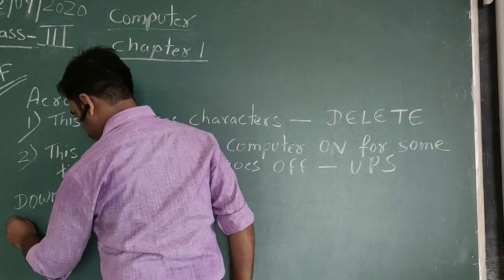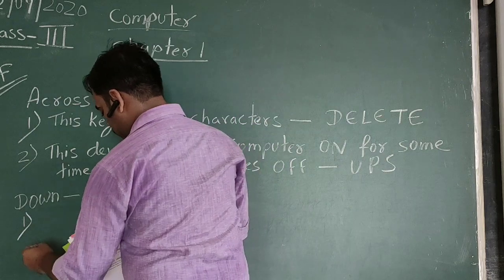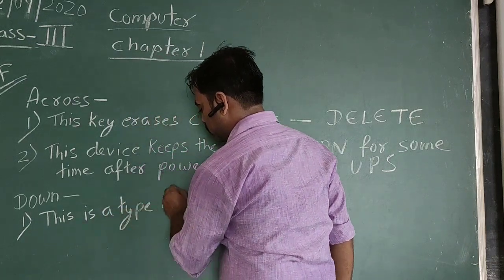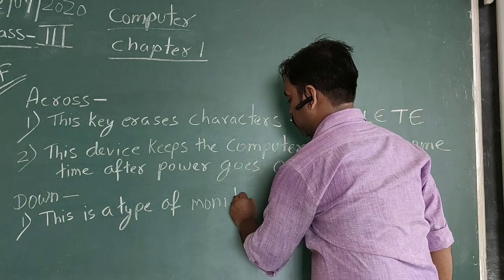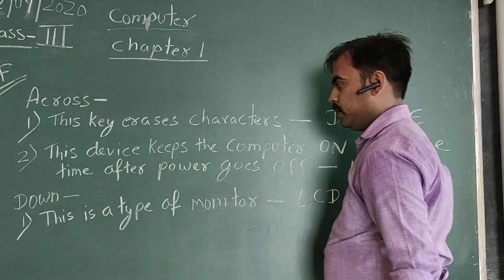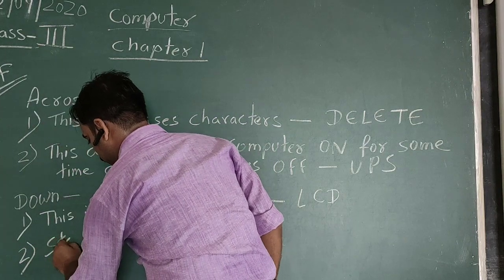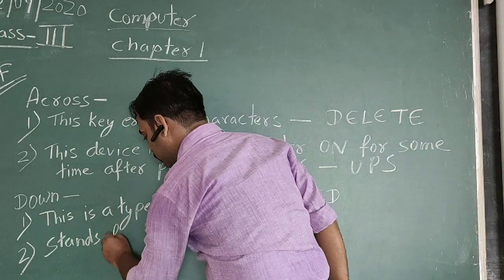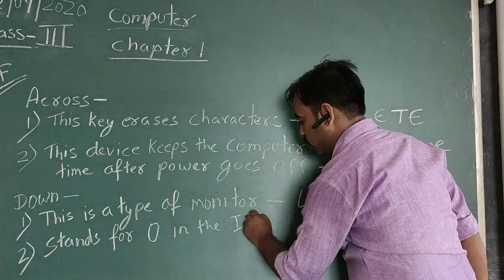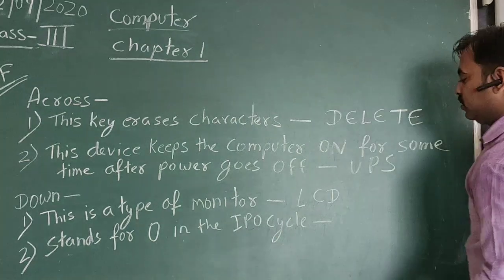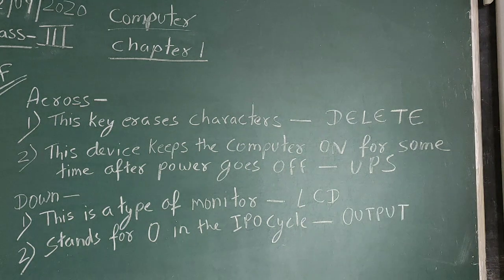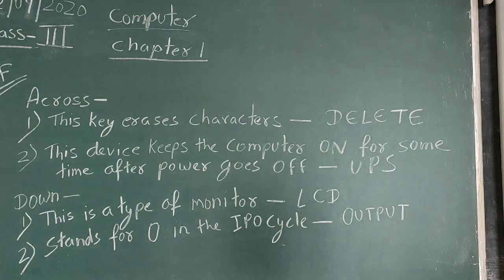After that, down. First one: This is a type of monitor. Correct answer is LCD. Second one: Stands for O in the IPO cycle. Correct answer is Output.